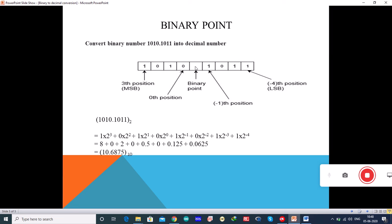You can see this is the binary point here: 0th position, 1st position, 2nd position and 3rd position. So obviously, if this is 0 position, when you are going to write, it will slowly decrease that is minus 1th, minus 2nd, minus 2nd and minus 3rd position.